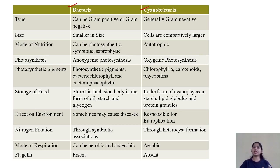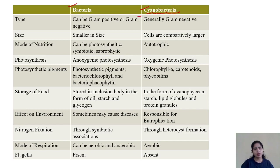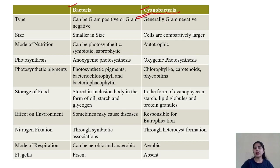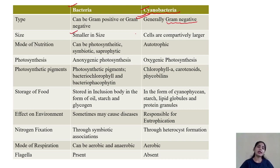Looking at differences: in eubacteria, the cell wall is present and they can be gram-positive or gram-negative, but in the case of cyanobacteria they are only gram-negative. This is because they have a peptidoglycan layer along with an LPS layer, which is a specific feature of gram-negative bacteria. Regarding size, bacteria are comparatively smaller than cyanobacteria.